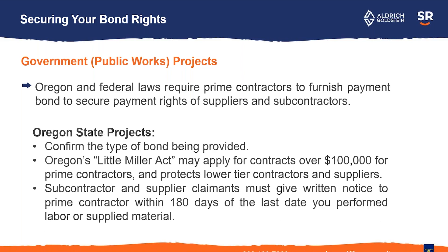Every state, as far as I know, has something called the Little Miller Act. These are individual acts that each state has that are the same idea as the federal Miller Act, but each state has its own requirements. In Oregon, if it's a contract over $100,000, you may be able to access the general contractor's bond on the project. You've got 180 days from the last day that you performed work or supplied material in order to file your claim. These are things you definitely want to see an attorney about, as there are offices that specialize in doing claims just like this.